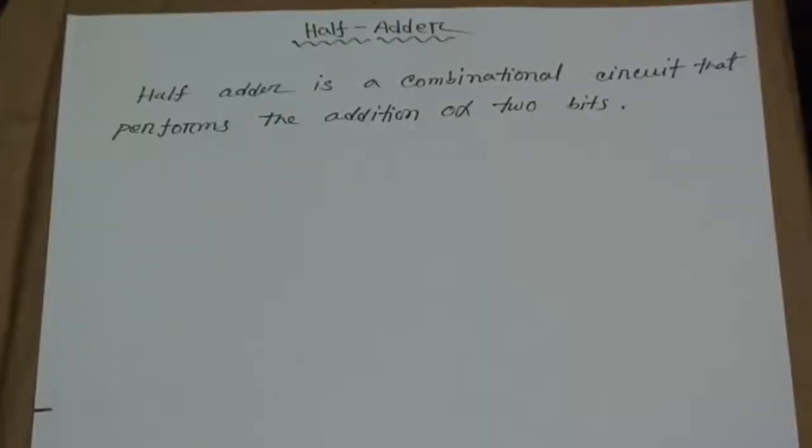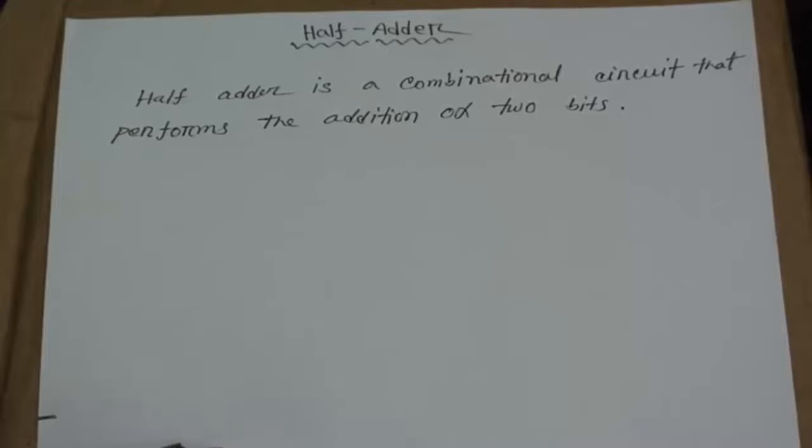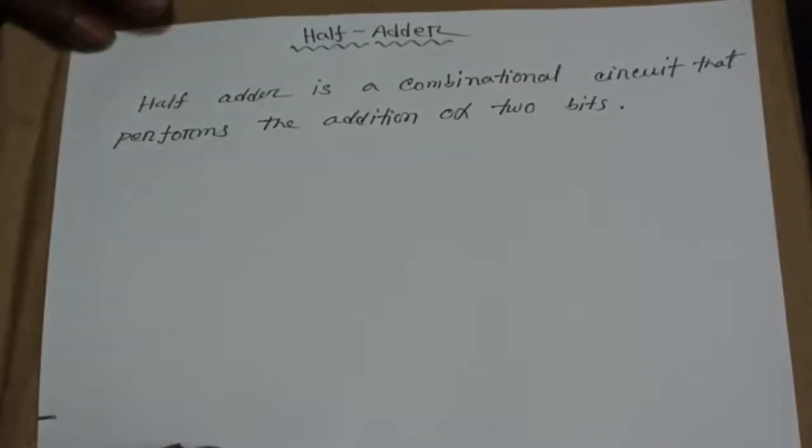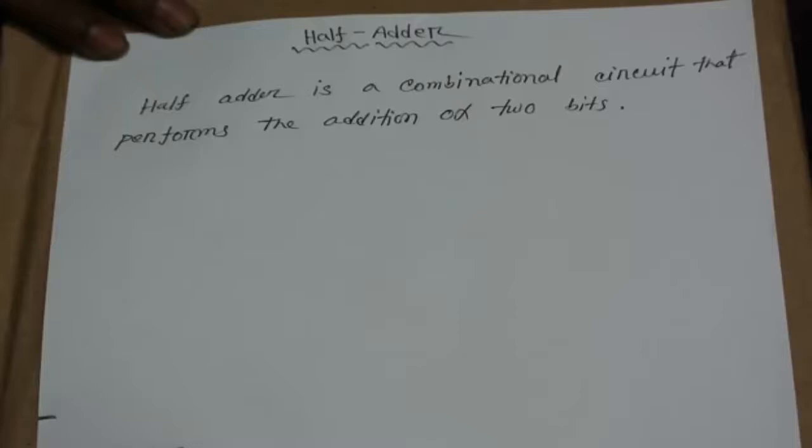Hello, I am Oli Kray. Today I discuss about half adder. Half adder is a combinational circuit that performs the addition of two bits. Half adder can add 2 bits and it has 2 inputs and 2 outputs.